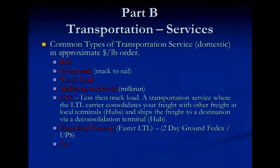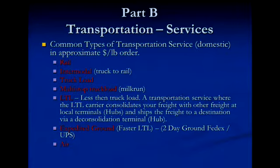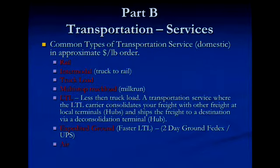Intermodal freight is where a truck drives in, a crane takes the container off the truck, puts it on the train, and then another truck delivers it. Truckload, where you're running the truck essentially from point A to point B, is the third cheapest by price per pound. Multi-stop truckload, where you're picking up maybe three suppliers and taking it to your facility, is the next cheapest — basically the same price as truckload, plus an extra $100 per stop or so.